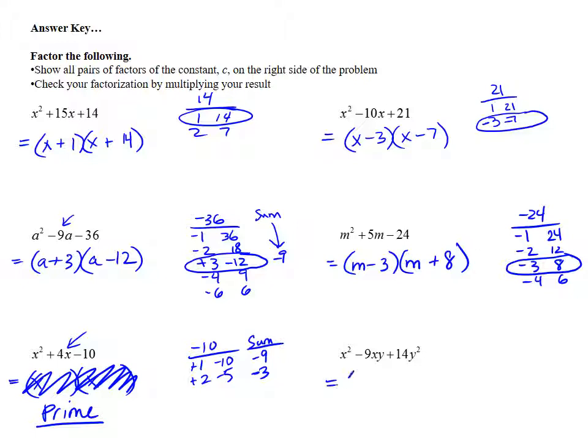Last example. x squared is going to factor to x times x. And then the y squared is going to split up into y and y. But the y is going to be paired up with factors of 14. So 1 and 14, 2 and 7. Right now they're positive, but I need a negative 9. So use negative factors here. And negative 2 and negative 7 are going to give me that negative 9. So I'm going to use negative 2y, negative 7y.